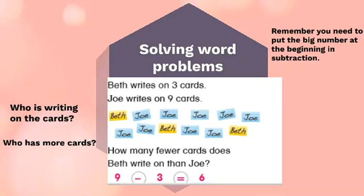If you look closely, you will see that Joe wrote on nine blue cards. Who wrote less? Beth only wrote on three yellow cards. How many fewer cards does Beth write than Joe?